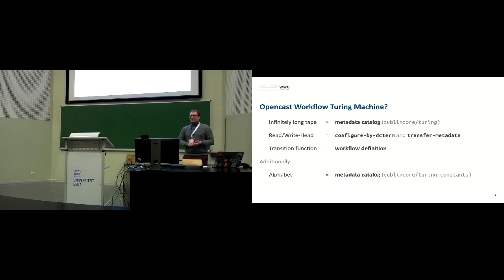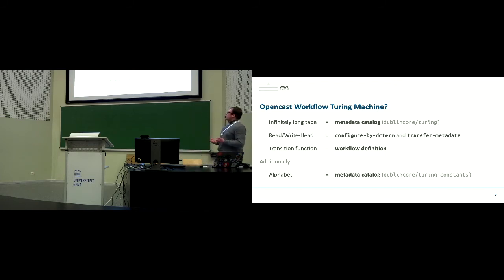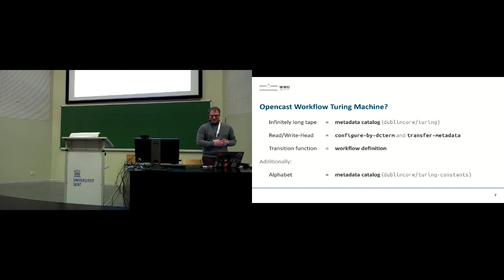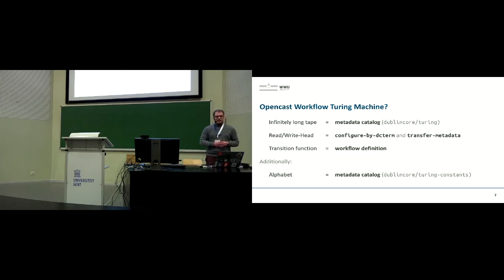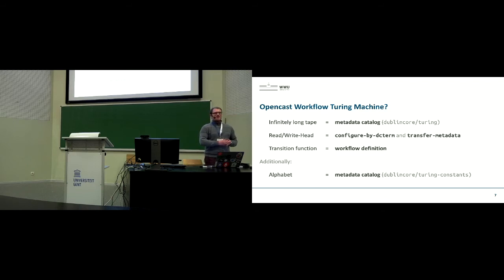So how do we do that in OpenCast? We need a few concepts. For the infinitely long tape, we can use metadata catalogs — I implemented a custom metadata catalog called Dublin Core Turing. For the read and write head, we use workflow operations — specifically configure-by-DC-terms and the newly added transfer-metadata operation, thankfully added in OpenCast 8. For the transition function, we just use a workflow definition.